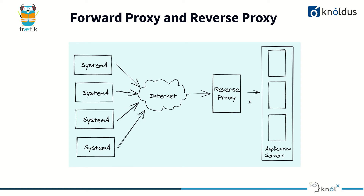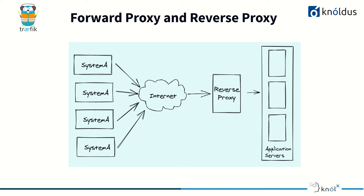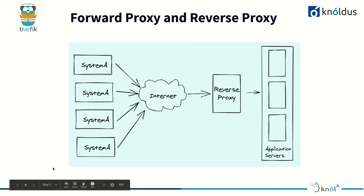A reverse proxy is the opposite — it hides the identity of the application servers rather than the client. In a reverse proxy, there is a front layer sitting over the application servers. When you hit a request to google.com, the response actually comes from the reverse proxy, not directly from the application servers. The reverse proxy forwards the request to the servers, gets the response, and forwards it back to the client.